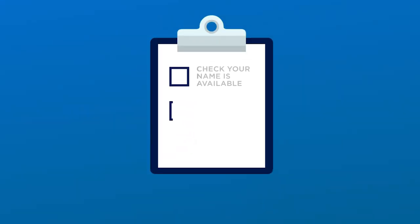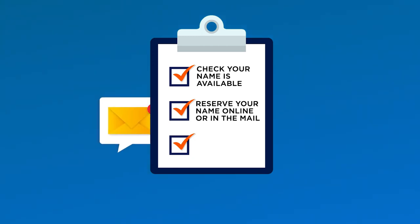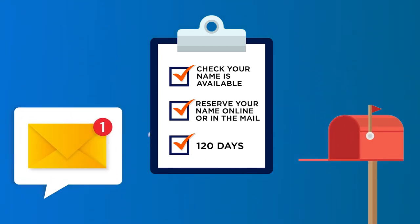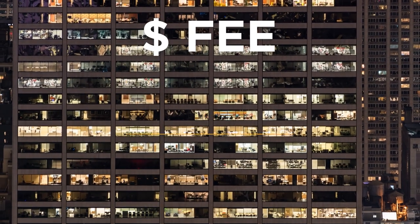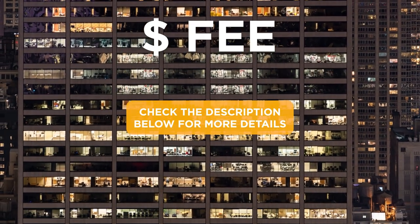First, check if your name is available by using the Kansas Business Search website. Then, reserve your LLC name online or fill and mail in a completed form. Your name can be reserved for 120 days. Note, there is a fee — check the description below for more details.